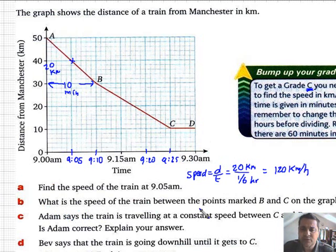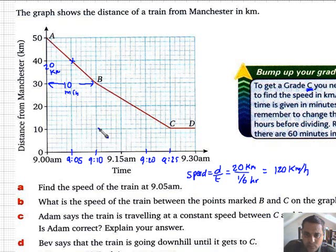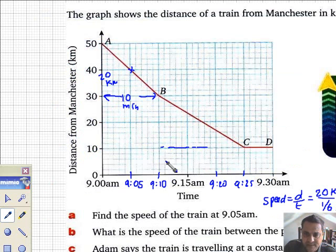What is the speed of the train between the points marked B and C? Let's just do it then. Same sort of thing. What's the time interval? From B to C, I've gone from 9.10 to 9.25. Essentially, that's 15 minutes. And the distance I covered was, again, 20 kilometers.